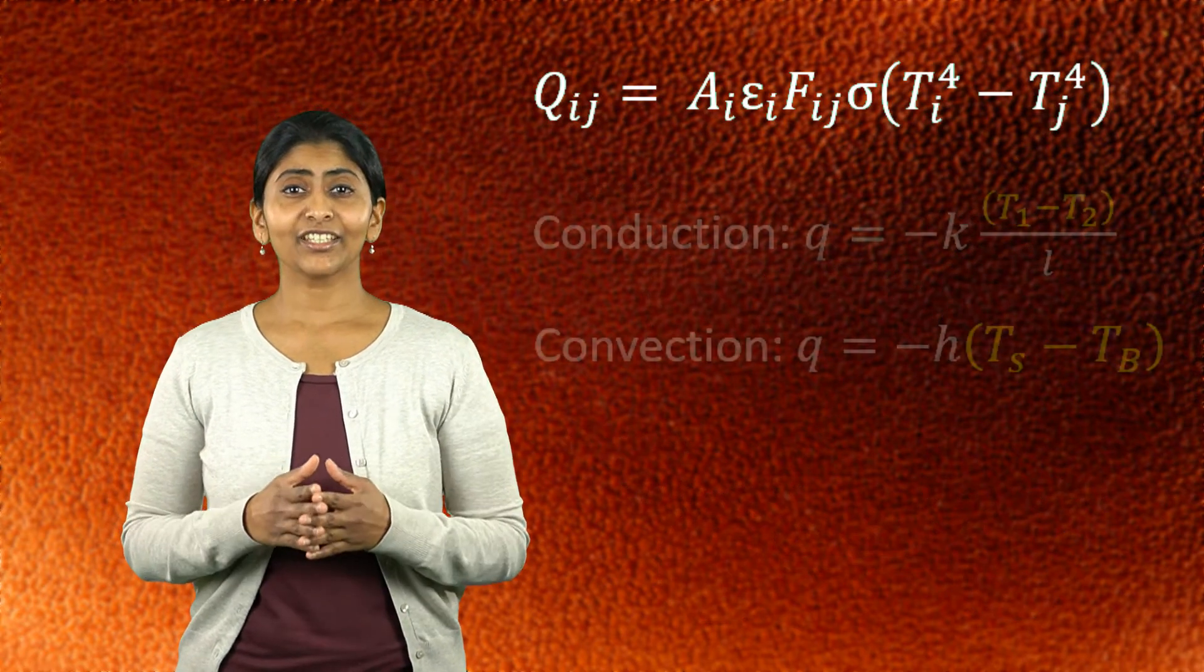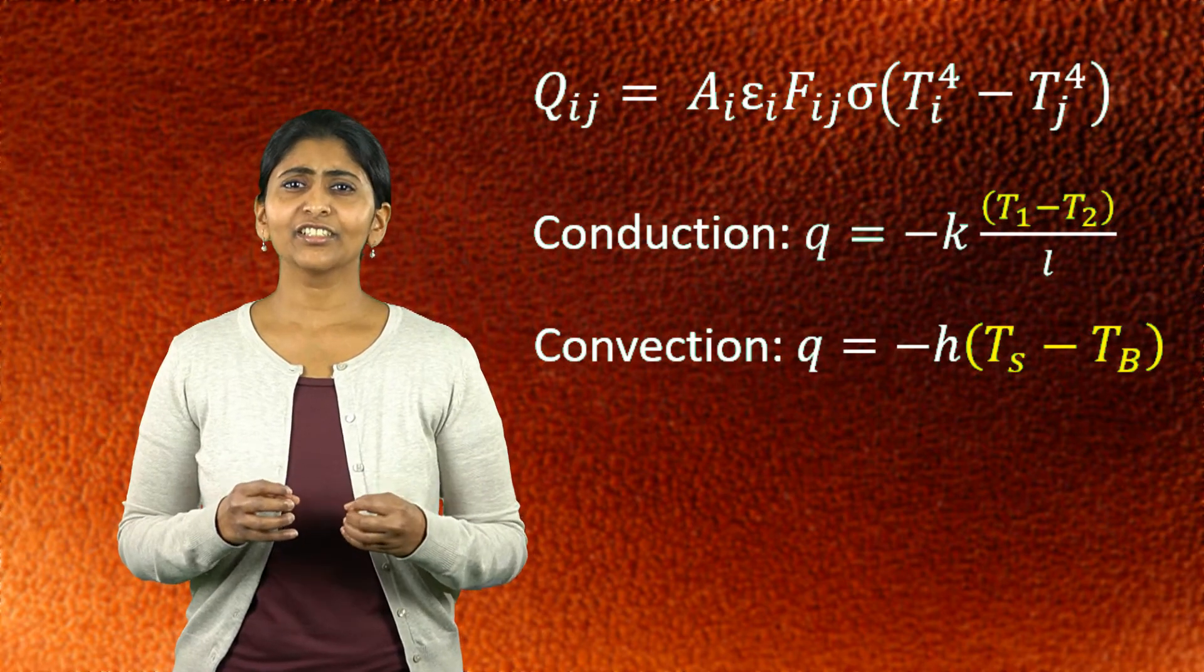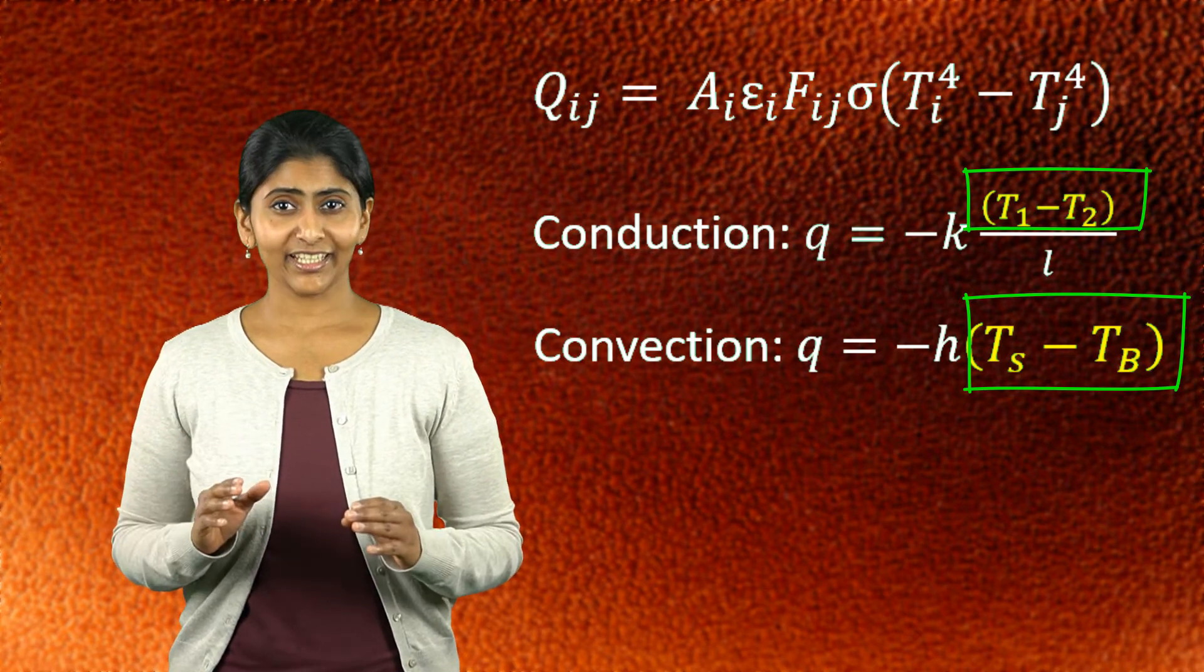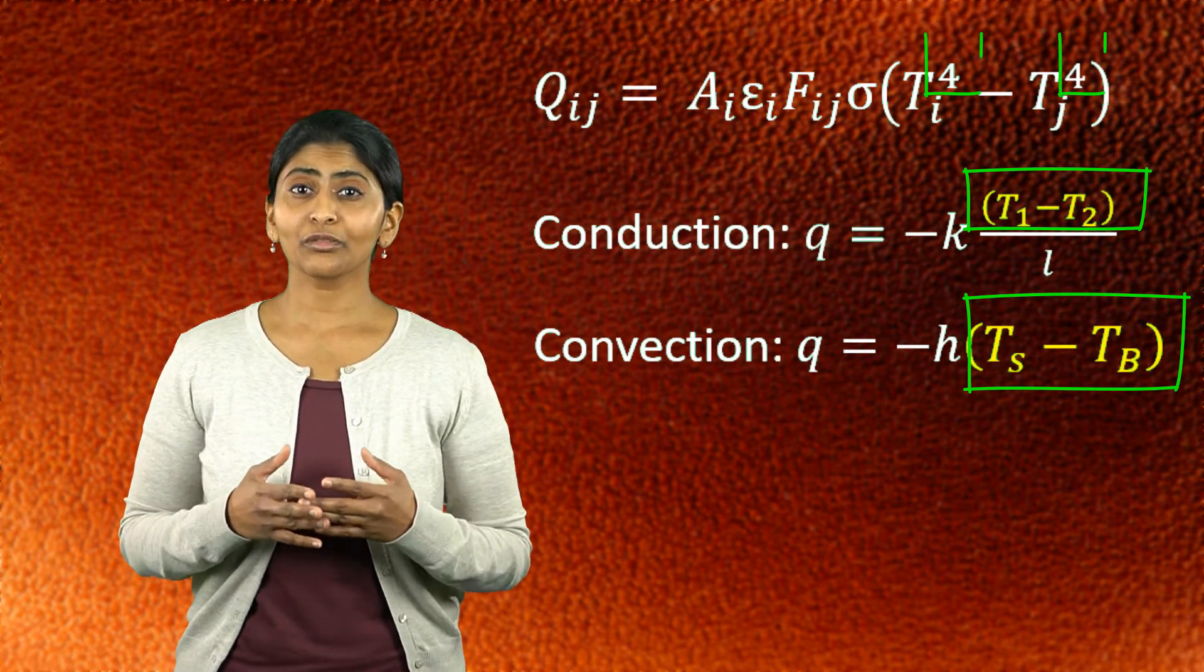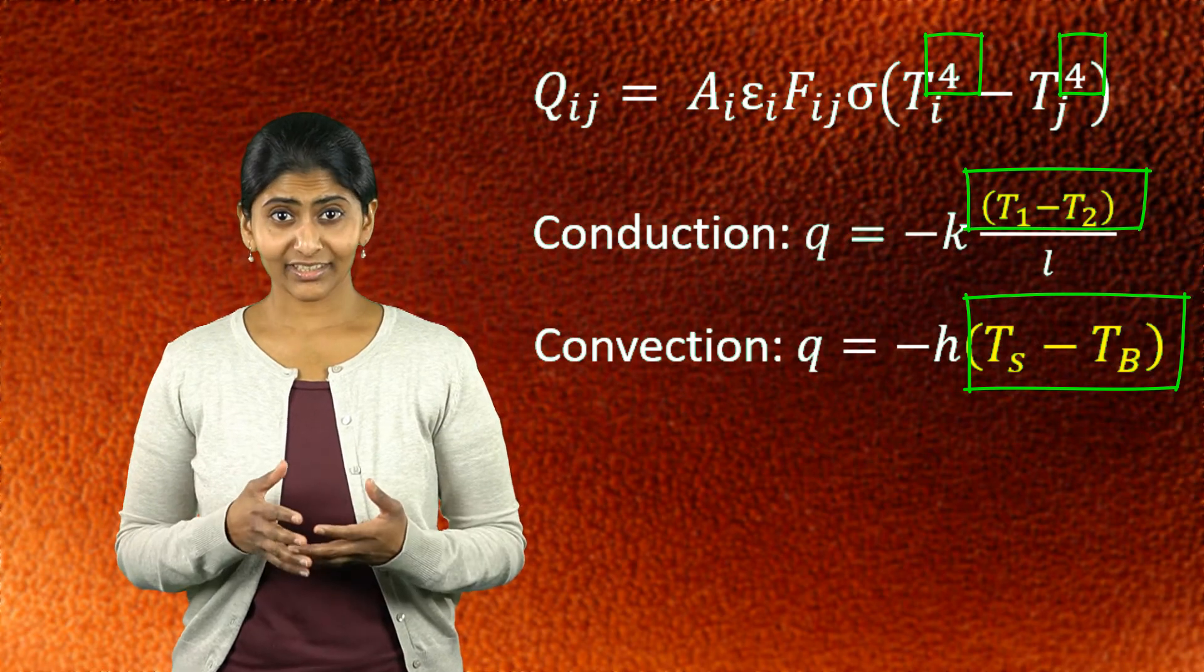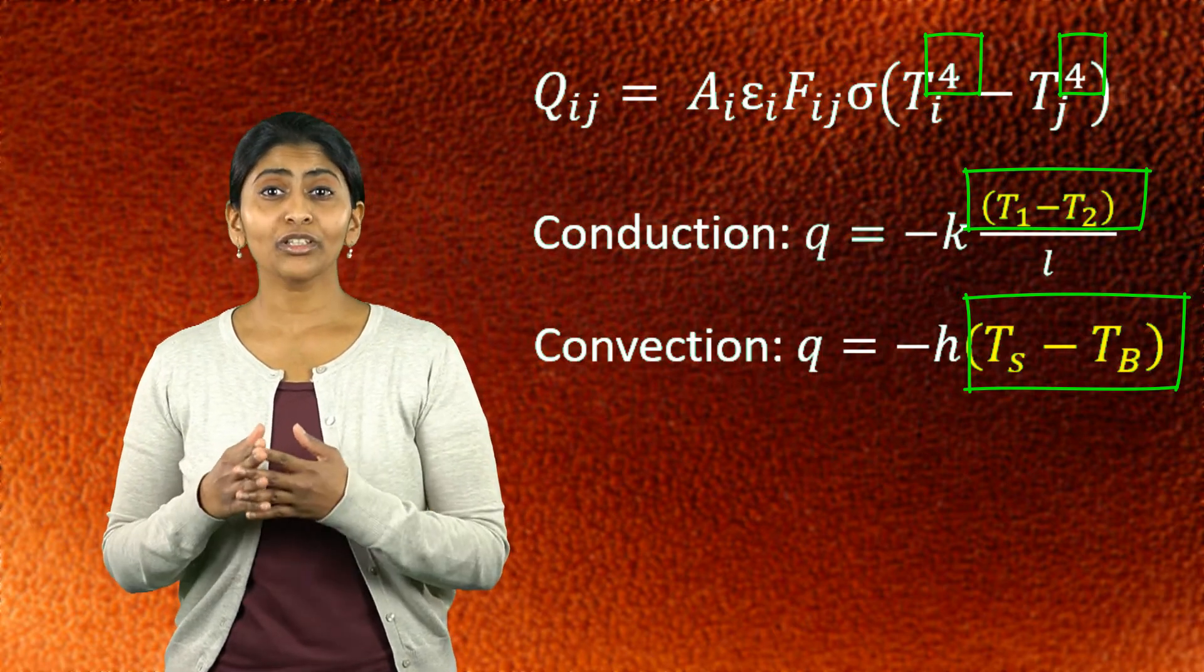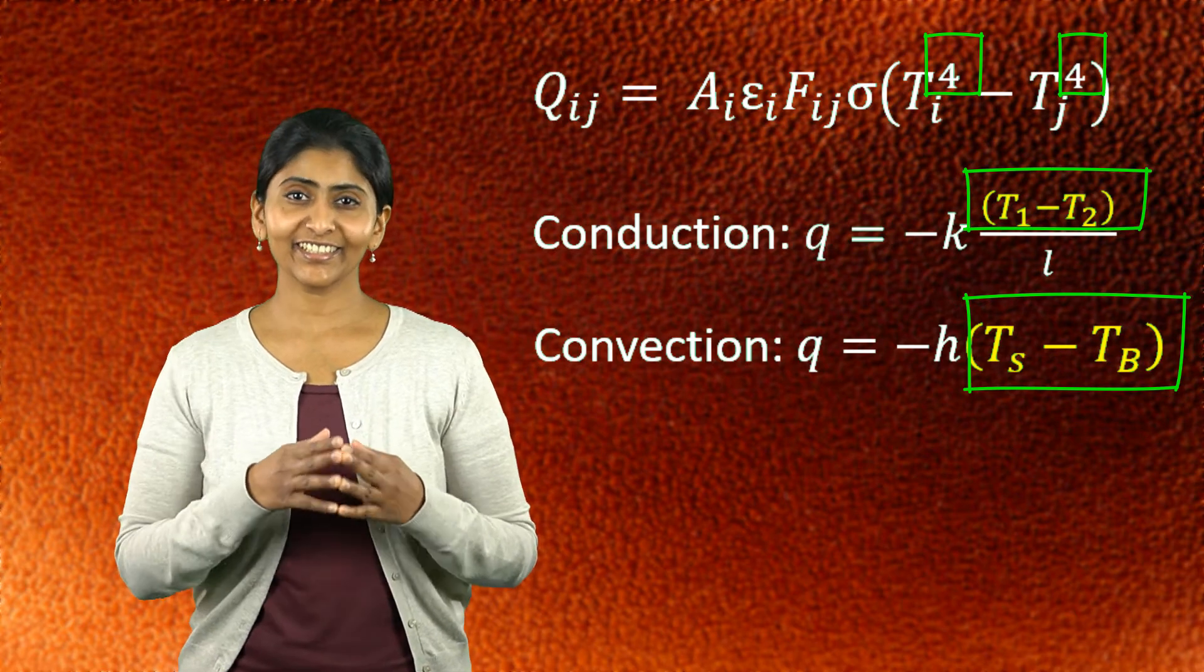Previously, in case of conduction and convection, we typically considered only the temperature difference between surfaces. However, in the case of radiation, we take the absolute temperature to the fourth power, then look at the difference. Thus, even though the temperature difference is the same, the use of absolute temperature to the fourth power is an important point concerning radiated heat.